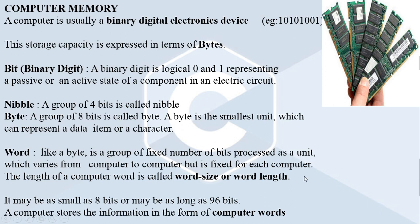If a computer word is of size 16 bits, the computer can process 16 bits of information at a time. A computer word means a group of fixed number of bits the processing unit can process at a time, and the length of that word is known as the computer word size or word length. It may be as small as 8 bits or as long as 96 bits, varying across different computers. The computer stores information in the form of computer words.